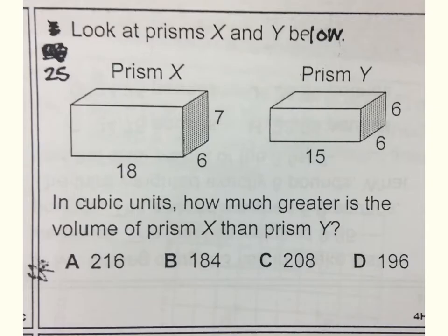Number twenty-five. Look at the prisms X and Y below. Prism X: a length of eighteen, a width of six, a height of seven. Prism Y: a length of fifteen, a width of six, a height of six. In cubic units, how much greater is the volume of prism X than prism Y?